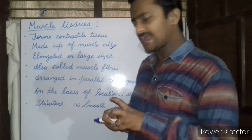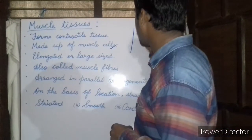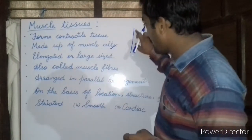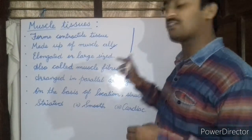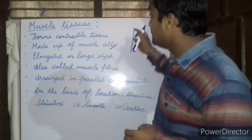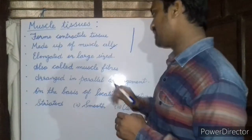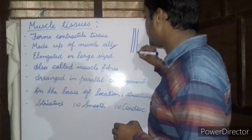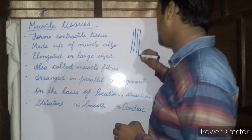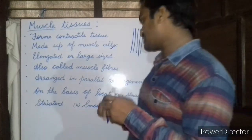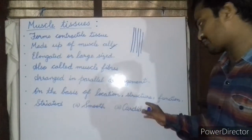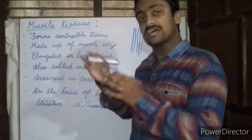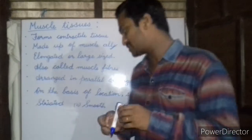These muscle cells are large sized and elongated. These elongated, large sized cells are also called as the muscle fibers. These muscle fibers are arranged in parallel to each other. On the basis of their location, structure, and function, these muscle tissues are further classified into three types.